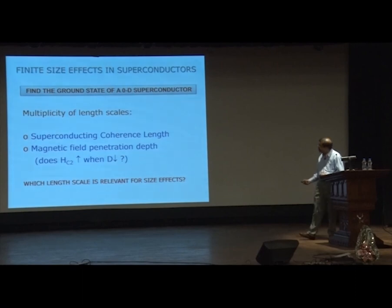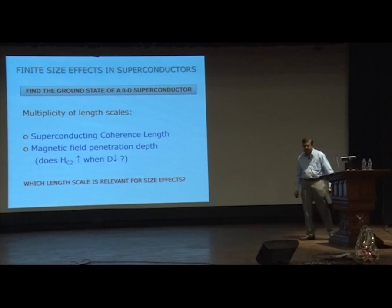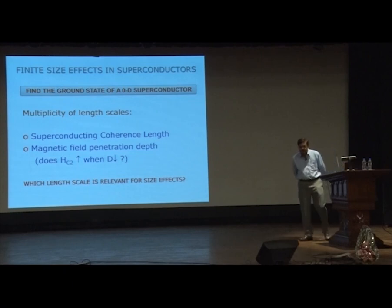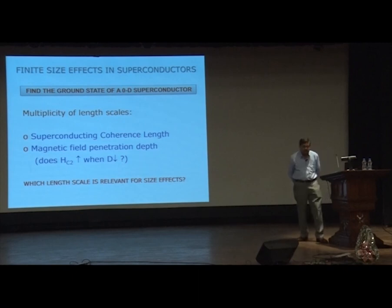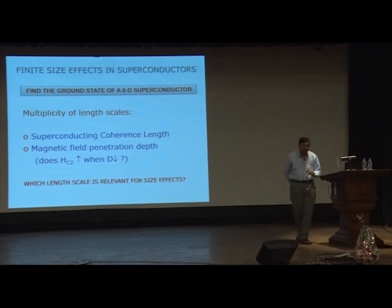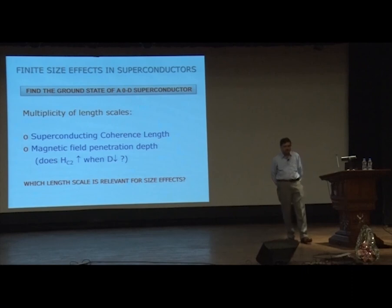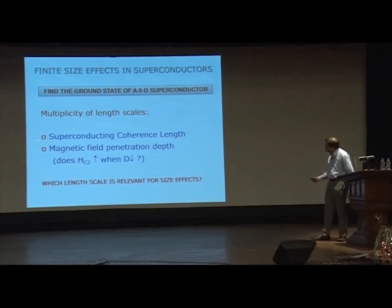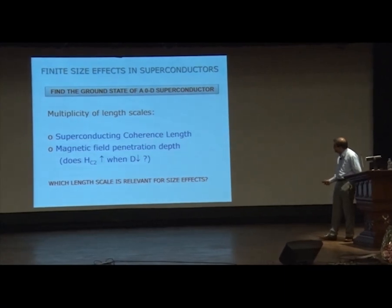If you are looking at particle size effects in systems which have some kind of long-range order — which is always interesting because they have some correlation length like magnetism or ferroelectricity — then you can compare the particle size to that correlation length and expect to see changes as you go below that particular size. Superconductivity is special because it has a number of correlation lengths, not just one.